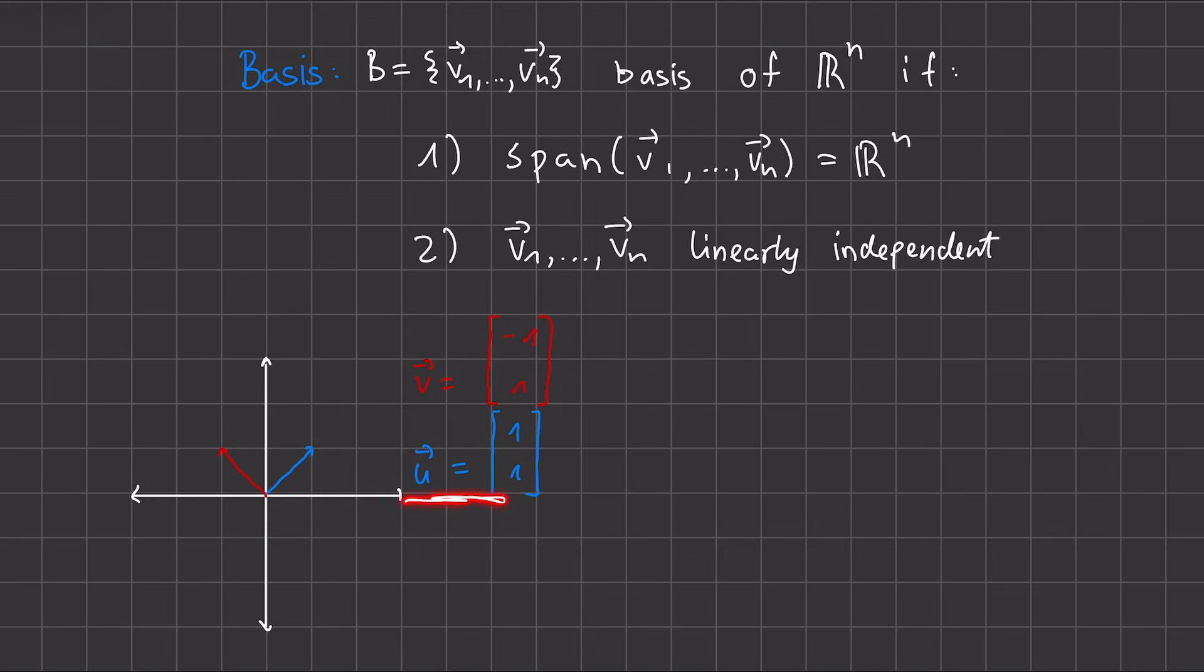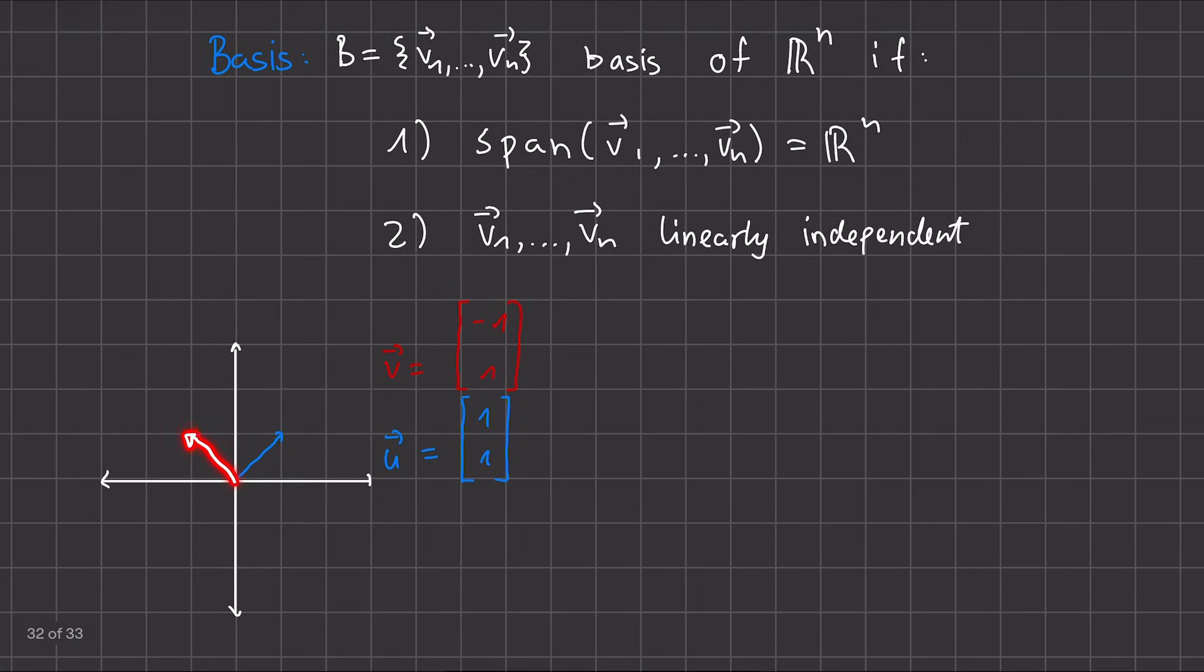You can solve this by putting this into a linear combination and set it to any vector in our R², and you'll see that you'll find alphas, so from our linear combination the scalars, that satisfy this. Further, these two are linearly independent because we cannot write this vector in terms of this one. They describe completely different lines.